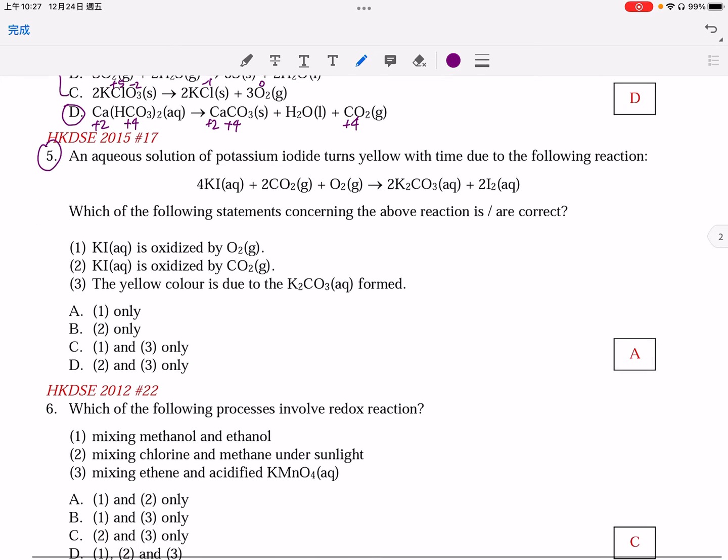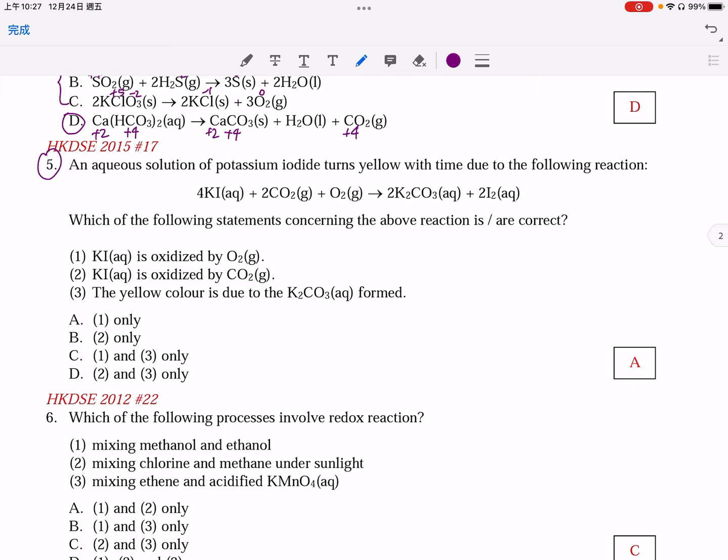Question number 5. Again, this is an unfamiliar situation. Anyway, from iodine to iodine, this is of course an oxidation. Which substance brings about the oxidation of iodide to iodine? Of course, that is oxygen, being the OA, oxidizing agent. Why? It is because the change in oxidation number of O is from 0 to negative 2. Therefore, option 1 is correct, option 2 is incorrect because carbon dioxide is not the oxidizing agent. And then for option 3, the yellow color.